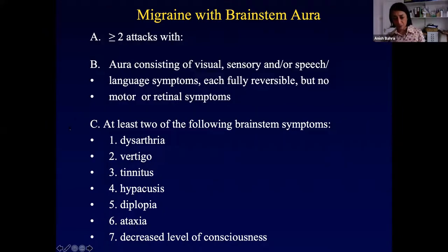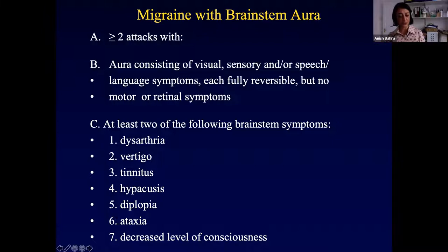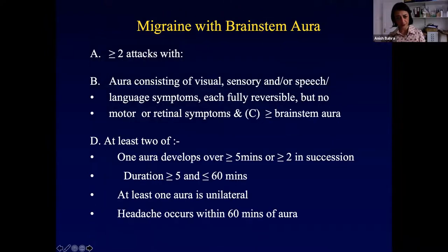Migraine with brainstem aura involves reversible symptoms without motor involvement: dysarthria (slurred speech), vertigo (sensation of movement), tinnitus, hyperacusis (everything sounding louder), diplopia (double vision), ataxia (unsteadiness walking), and decreased level of consciousness. Usually these occur in succession, very slowly over time, followed by headache. This is more like migraine with typical aura, with headache occurring within 60 minutes of aura.